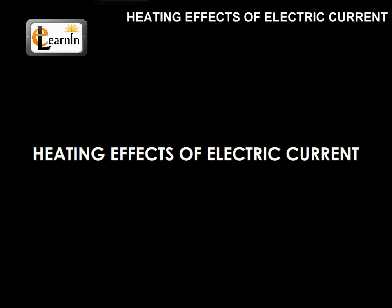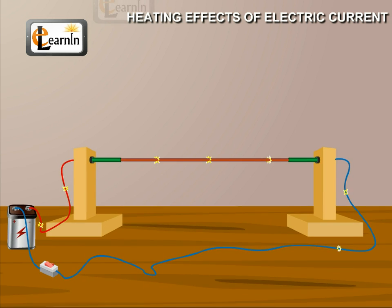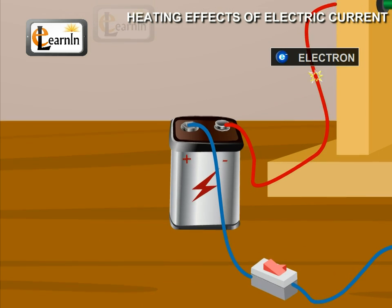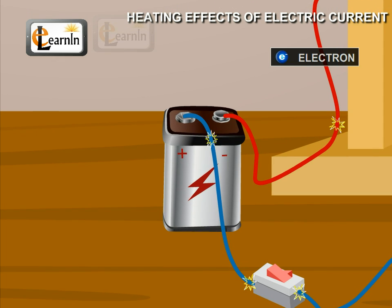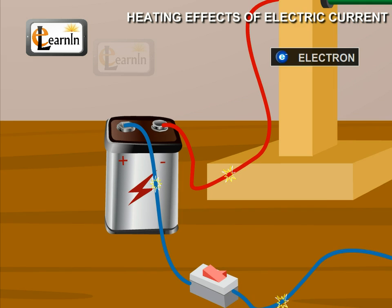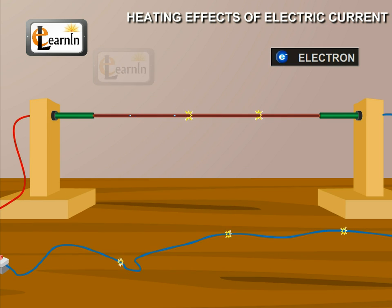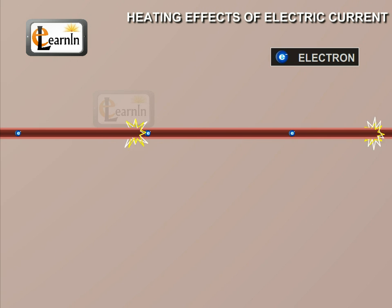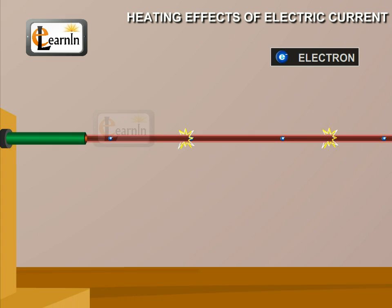Let us understand the heating effect of an electric current. We know that the battery or a cell is a source of electrical energy. The chemical reaction within the cell generates the potential difference between its two terminals that sets electrons in motion to flow the current through a resistor or a system of resistors connected to the battery. In order to maintain the current, the source has to keep expending its energy.